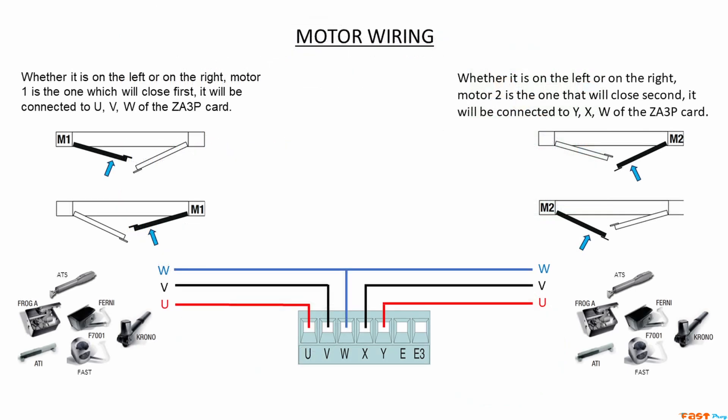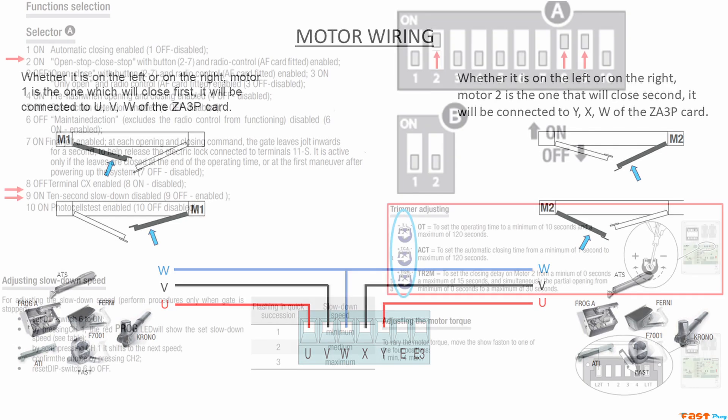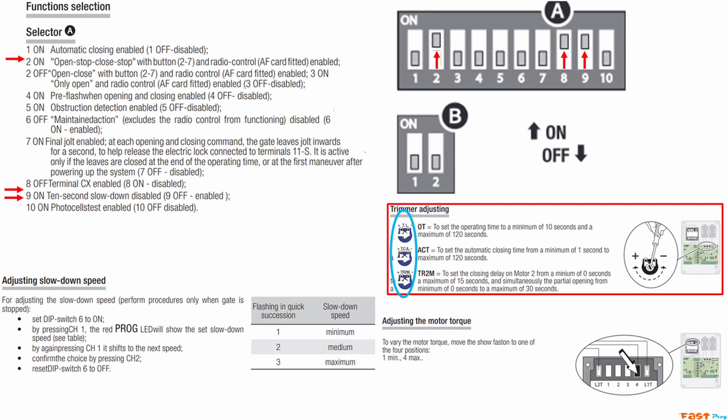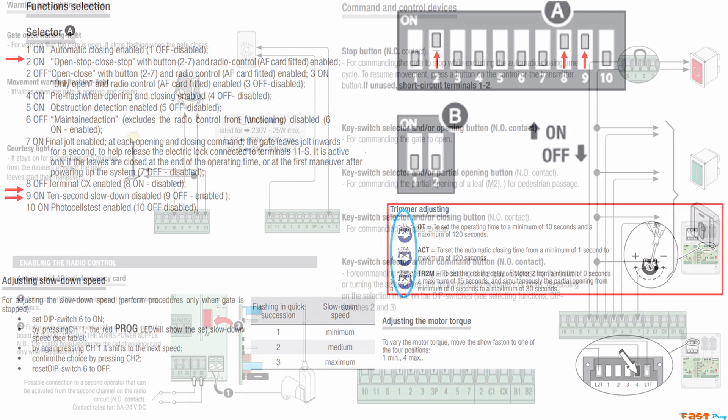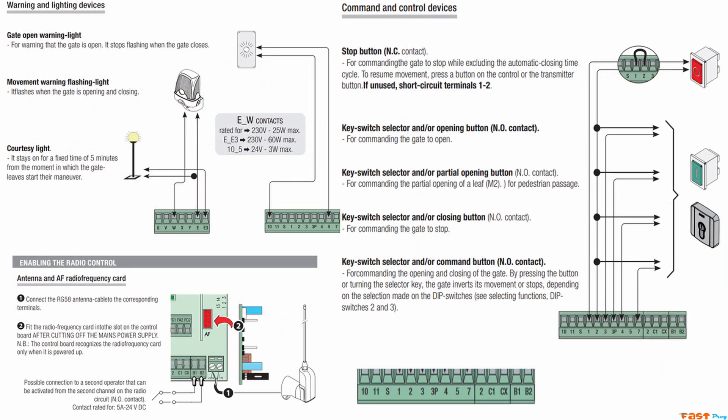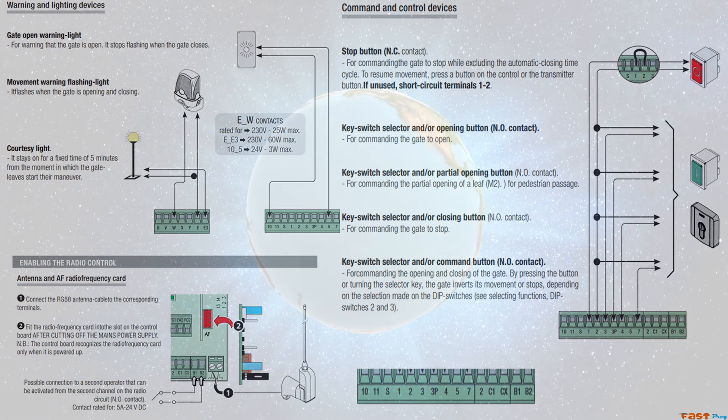If the motors don't run a full cycle or, on the contrary, run too long after reaching the stop points, adjust the TL potentiometer. A good way to check the maneuvering time is by watching the flashing light connected to the W and E terminals on the ZA3P. For reference, the light stays on for the entire operating time.